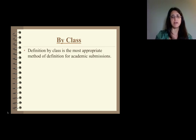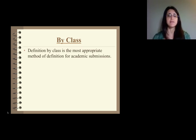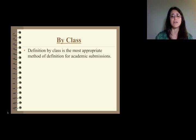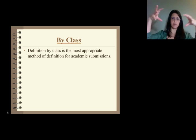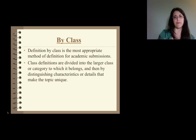Now the next way to define is by class. Definition by class is often the most appropriate method of definition for academic submissions. In part one we talked about trout being a kind of fish, and so that was where we classified it by class or category. This is when we take that big family tree and we start to break it down and break it down into more specific ideas. Class is a great way to help us begin that.